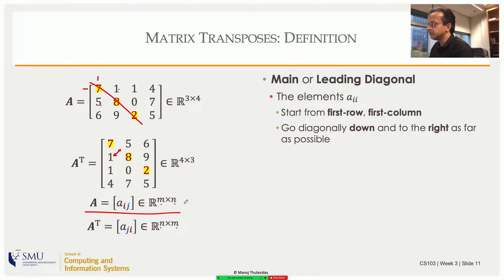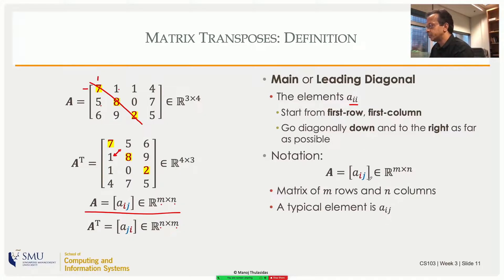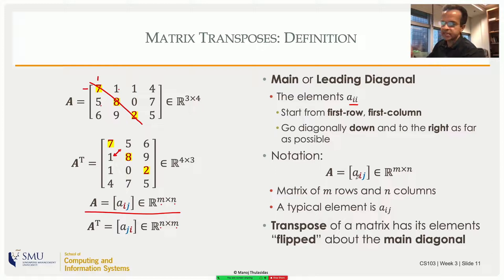So we define the main diagonal. It's a collection of elements of the type A_ii. So start from the top left, and then go down and to the right to the extent possible. Then we introduce this new notation there. So transpose of a matrix using the concept of main diagonal is a reflection or flipping of the elements about the main diagonal.